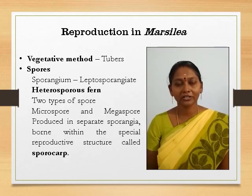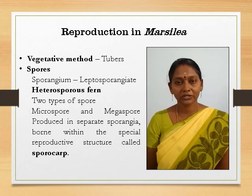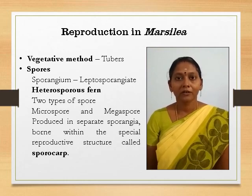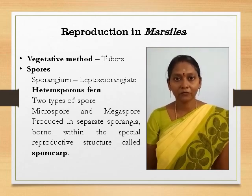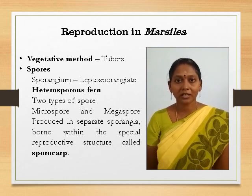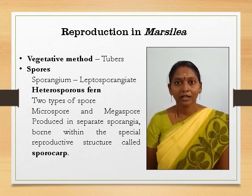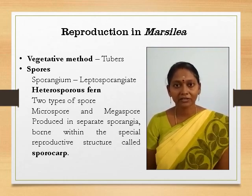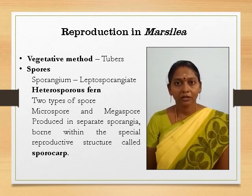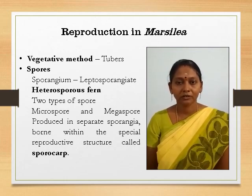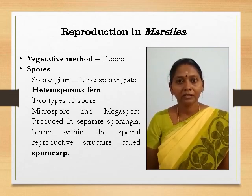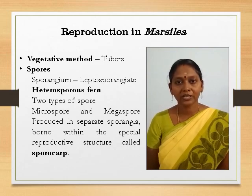Marsilea reproduction takes place by two methods: one is vegetative reproduction and the second one is by spore formation. Vegetative reproduction takes place with the help of tubers. In Marsilea, tubers are produced in the rhizome and they store oil droplets. These tubers act as a perennating ring structure. They remain dormant during unfavorable conditions. When the condition is favorable, the tubers germinate and produce a new plant.